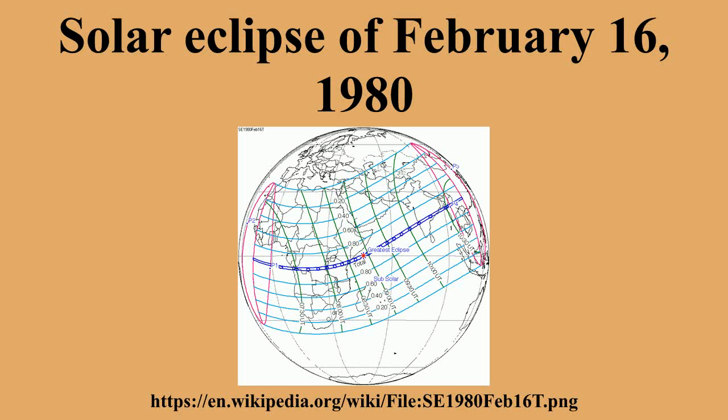Each member in a semester series of solar eclipses repeats approximately every 177 days and 4 hours at alternating nodes of the Moon's orbit. It is a part of Saros Cycle 130, repeating every 18 years and 11 days, containing 73 events.